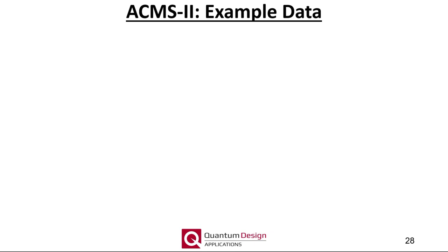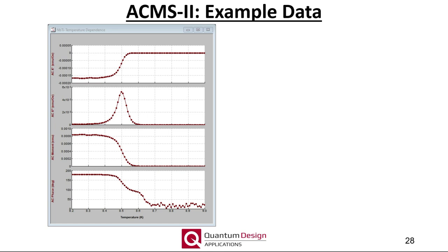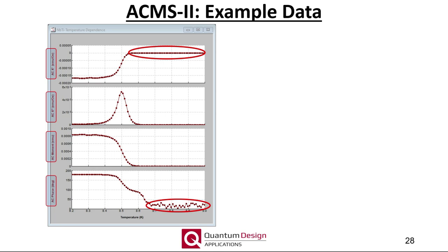Now for a couple of quick examples of data generated using the ACMS2 option. Here is a temperature-dependent measurement using a DC field of 1.5 Tesla of a niobium-titanium superconductor. The AC drive field was fixed at about 1 kHz at an amplitude of 5 Oe. The plate-like sample was simply glued to a quartz paddle using GE varnish. I plotted the real and imaginary components along with the amplitude and phase. This measurement was performed upon warming: initially the sample is in the superconducting phase, showing a large negative value of the real component and a 180-degree phase shift. As the temperature increases, the sample returns to the normal phase, indicated by a very weak paramagnetic response. Note the phase is not zero as the sample is still electrically conductive above its superconducting transition temperature.